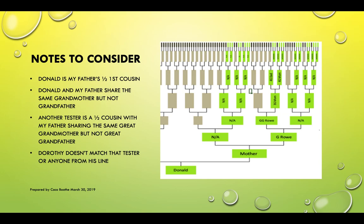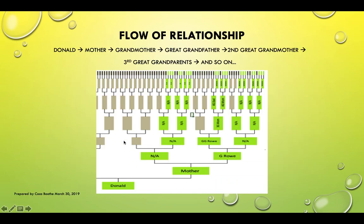The floor of relationship is: Donald, his mother, his grandmother, his great-grandfather, his second great-grandmother, and then his third great-grandparents and so on.